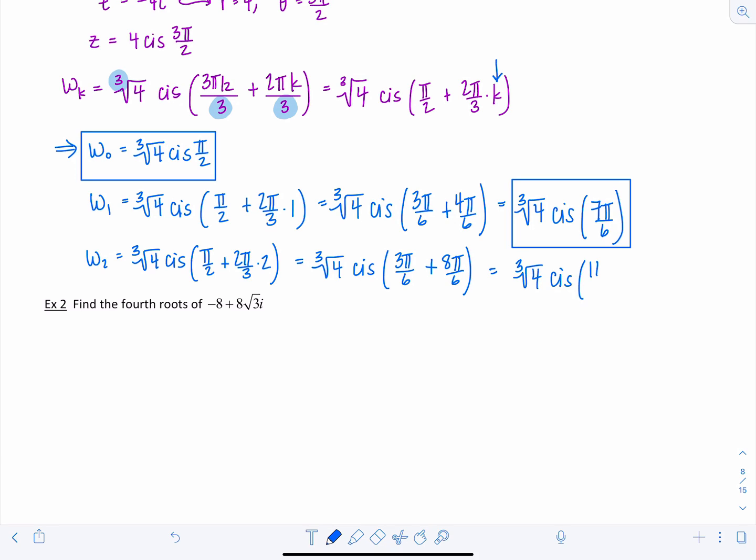If you ever got carried away and did too many, then they would start repeating back at the beginning. So if I tried to do w sub 3 I'd get the same thing as w sub 0. Okay so there's all the cube roots, let's look at one more example.